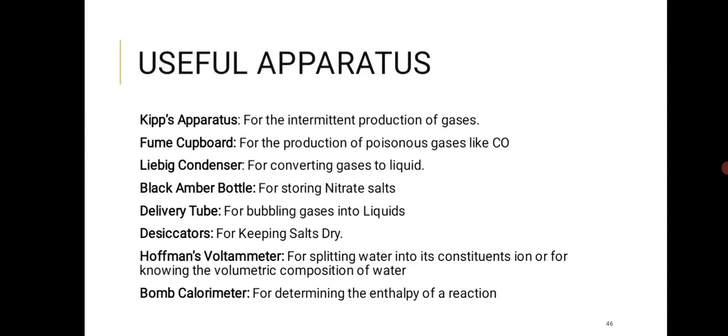Key apparatus to know: the Kipp's apparatus for intermittent production of gases; the fume cupboard for production of poisonous gases like CO; the Liebig condenser for converting gases to liquids; the black amber bottle for storing nitrate salts; and the delivery tube for bubbling gases into liquids.